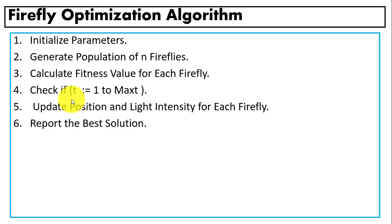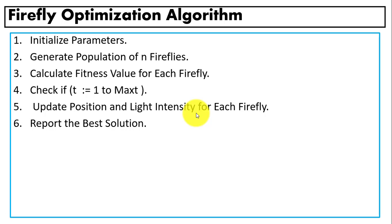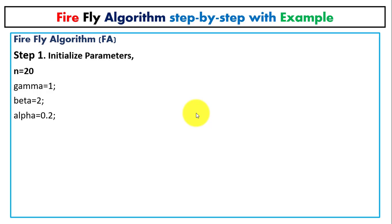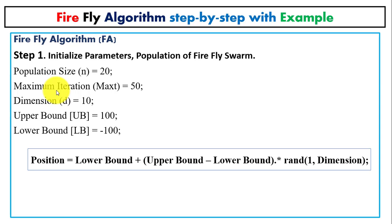The Firefly Optimization Algorithm has six steps: initialize parameters, generate the population for n fireflies, calculate the fitness value, check a condition, update the position and light intensity value for each firefly, and report the best solution. In step one, we initialize parameters — for example, 25 flies with values for gamma, beta, alpha, maximum iterations of 50, dimension of 10, and upper and lower bounds.